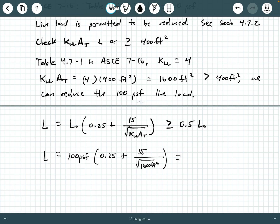We're going to say L is equal to 100 PSF open parentheses 0.25 plus 15 all divided by square root of 1,600 square feet. And we will punch this in our calculators. And I'm using my TI-36X Pro calculator. And so I get, of course, 100 PSF times this whole parenthetical expression is 0.625.